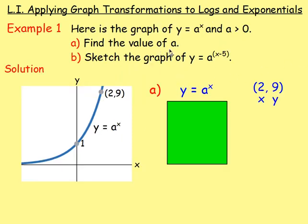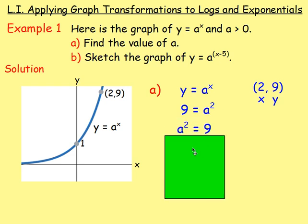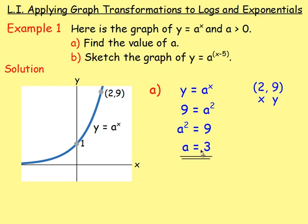We want to find the value of a. Because we know it passes through the point (2, 9) and it's of the form y equals a to the power of x, we can substitute in the x and the y values. So replacing y with 9 and replacing x with 2, we end up with 9 equals a squared. If a squared is 9, then a would equal 3 — really positive or negative 3, but the question states a is bigger than 0, so a must be 3. Therefore the equation is y equals 3 to the power of x.